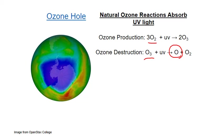These two processes, production and decomposition, when undisturbed, are in equilibrium, meaning the rates are equal. As fast as an ozone molecule is destroyed by UV light, another is produced from molecular oxygen. So under natural conditions, the levels of ozone in the stratosphere stay relatively constant.